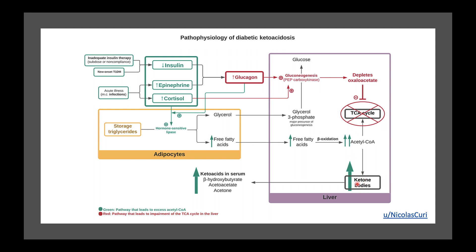Another element we need to look at before the pathophysiology is the concept of counter-regulatory hormones. Remember, your counter-regulatory hormones are going to be epinephrine, cortisol, and glucagon — these are your stress hormones. I would also add norepinephrine and growth hormone to this list. These are all those catabolic stress hormones.